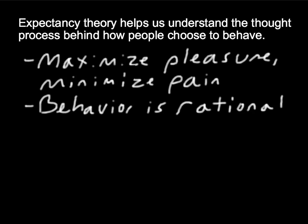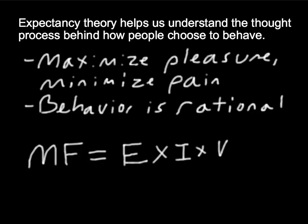We can think of it this way: our motivational force is a function of three things. First, it's a function of our expectancy, or what we also can refer to as our effort to performance expectancy, times our instrumentality, also known as the performance-to-outcome expectancy, times the valence, or the value that we place on some particular outcome. We're going to use this type of formula to work through what expectancy theory helps us understand.